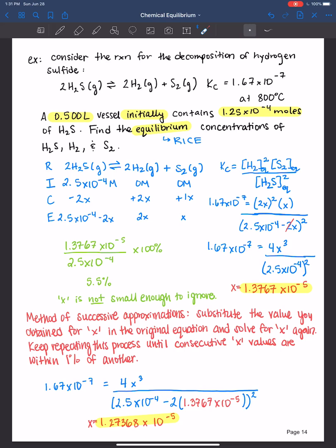Let's continue on with the next approximation. Following the same procedure, I'm going to plug in 1.67. Write down the original equation. It's equal to 4x cubed over 2.5 times 10 to the negative 4th minus 2 times, and then I put in that second approximation that we just calculated, and that's squared. Once again, solve for x. And x is 1.28153 times 10 to the negative 5th.